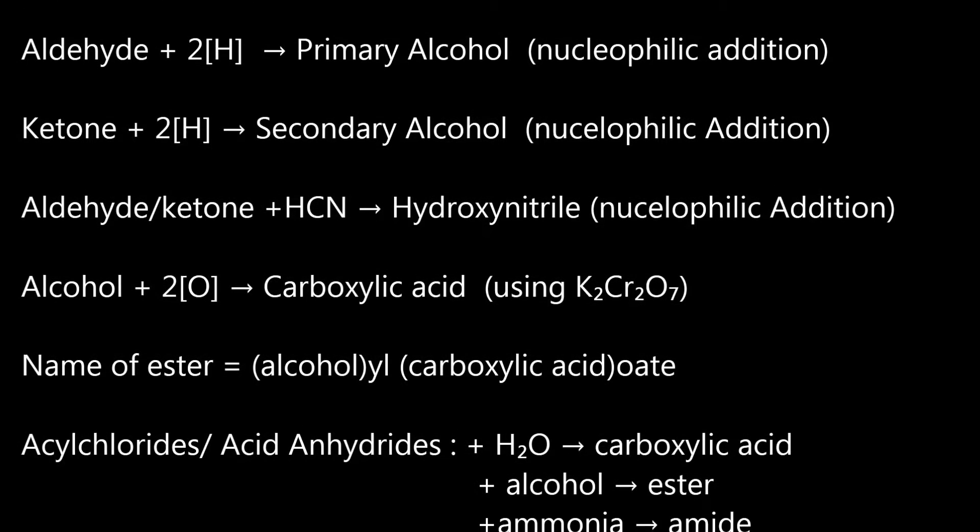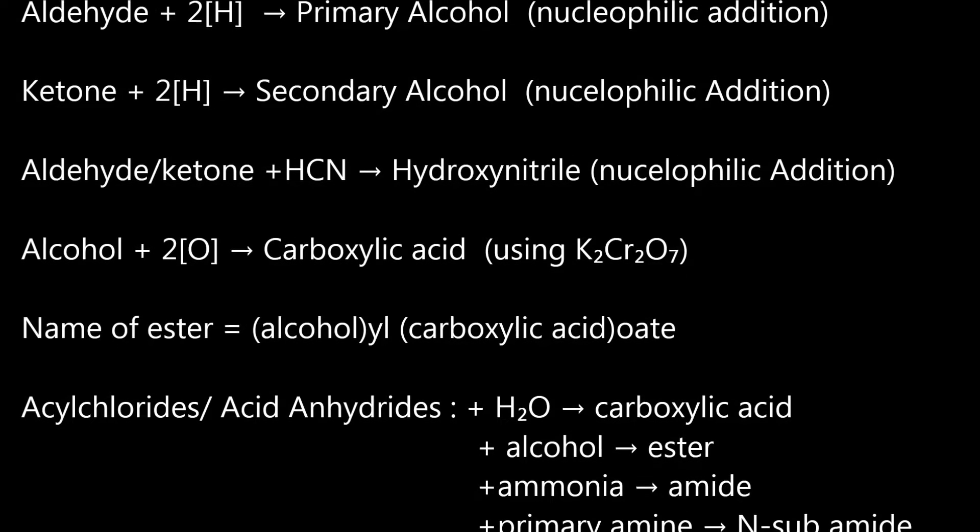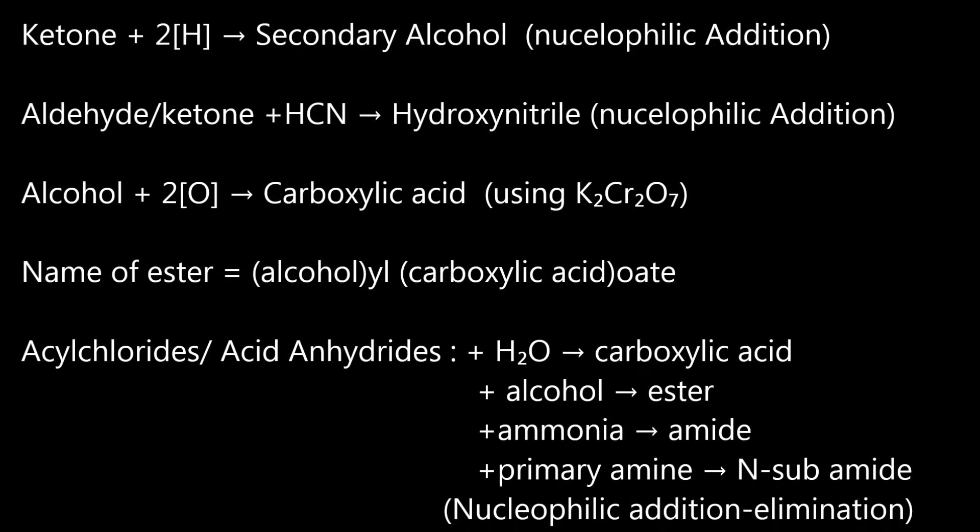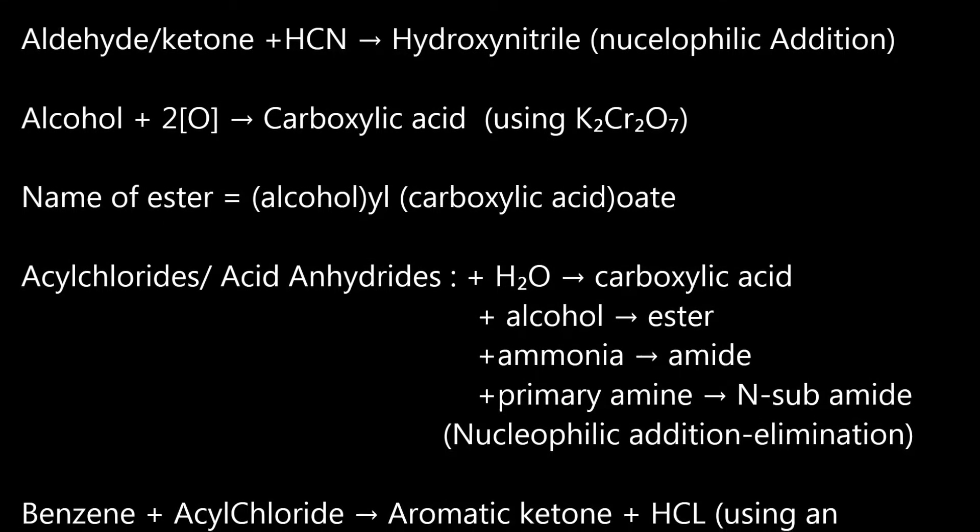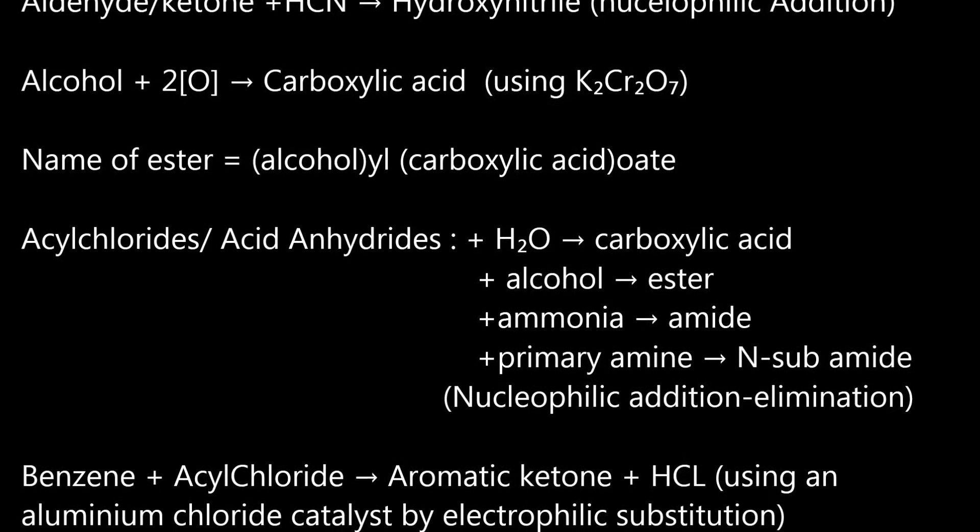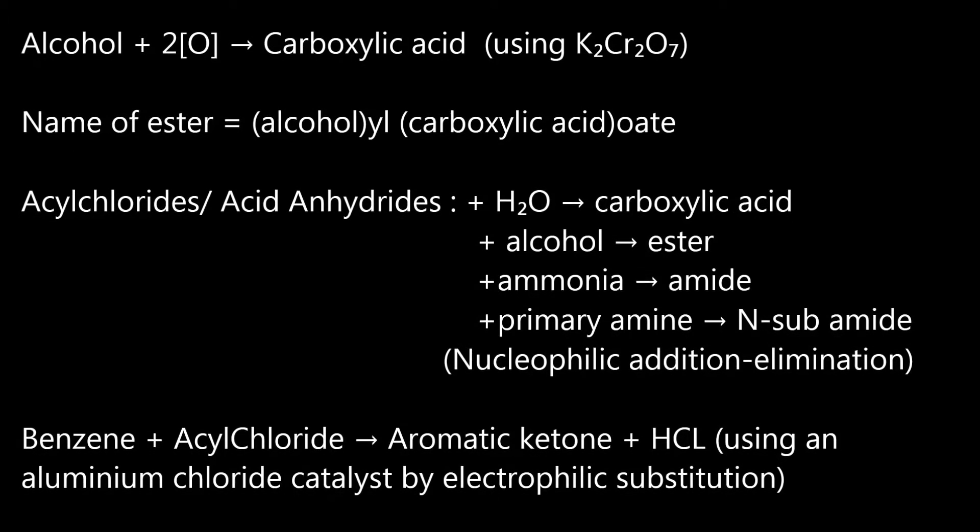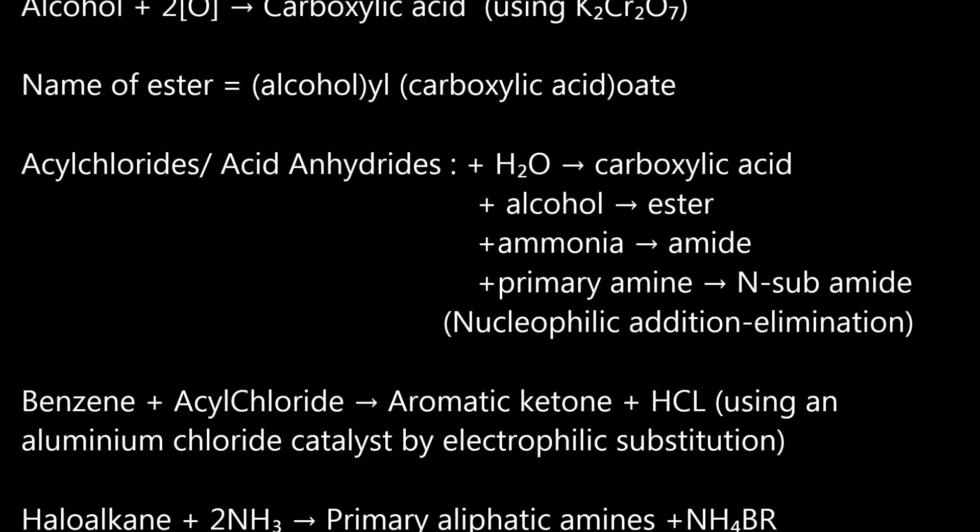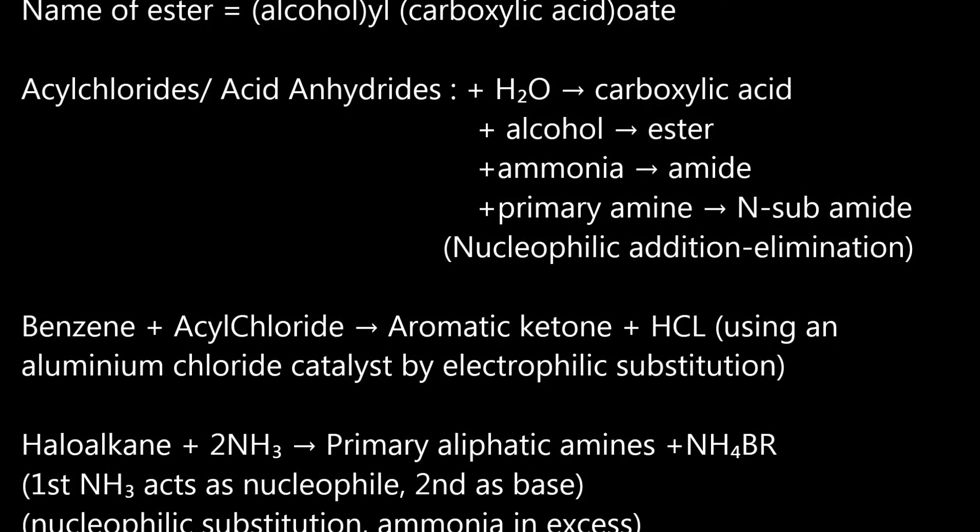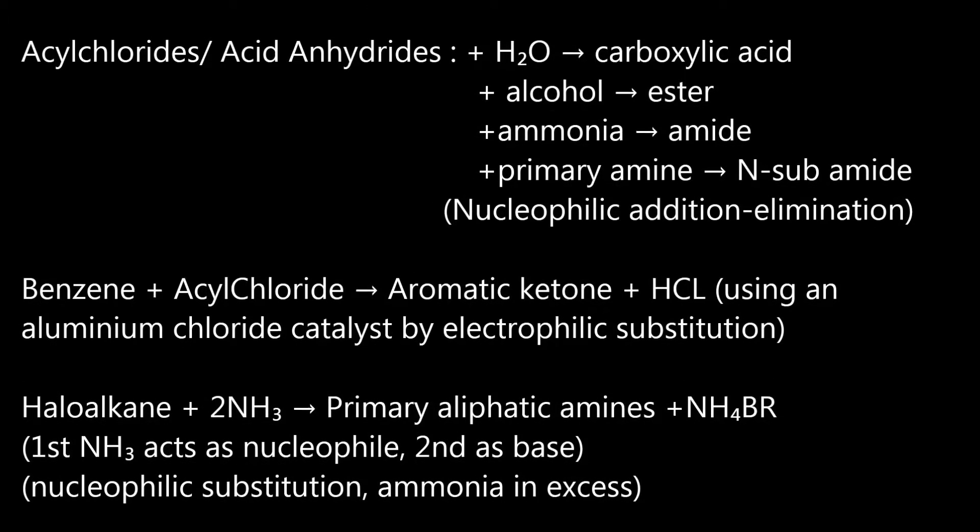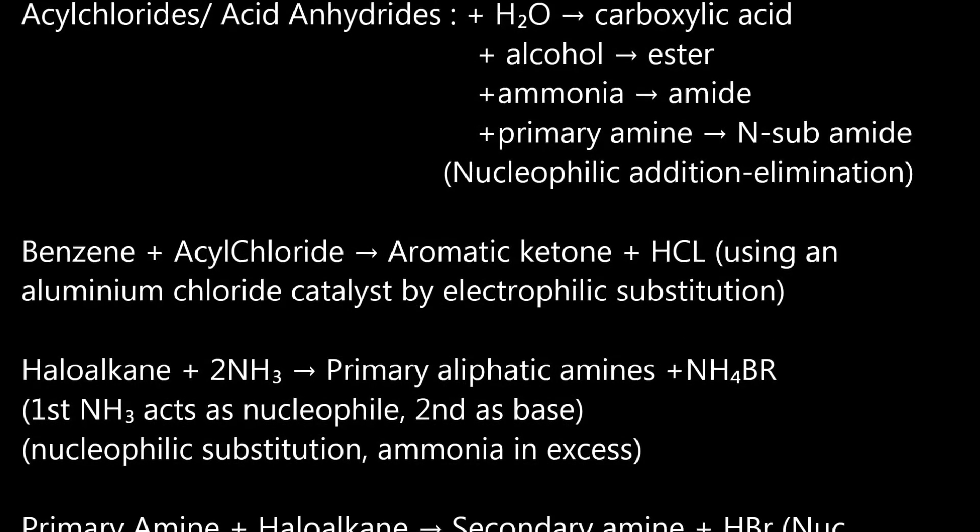Acyl chloride or acid anhydride plus water goes to carboxylic acid, plus alcohol goes to ester, plus ammonia goes to amide, plus primary amine goes to N-substituted amide, all by nucleophilic addition-elimination. Benzene plus acyl chloride goes to aromatic ketone plus HCl using aluminum chloride catalyst by electrophilic substitution.